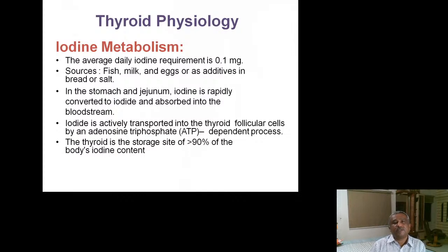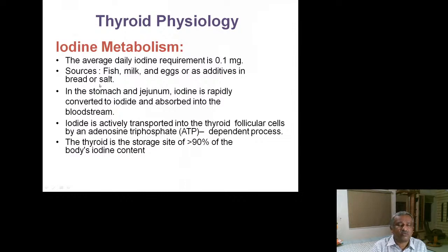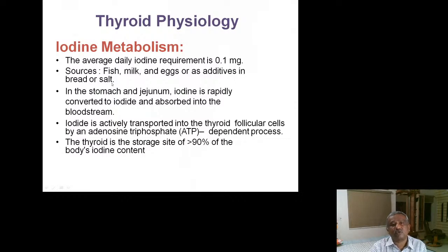First, let's talk about some basics. In thyroid physiology, iodine metabolism is very important. The average daily iodine requirement is 0.1 milligram. The main sources are fish, milk, eggs, or as an additive in bread and salt. In India, we are now using iodized salt — it was a community initiative to reduce epidemic goiters. Iodized salt given to pregnant ladies also helps because lack of iodine is thought to cause lower IQ in children. Giving iodized salt increases intelligence and IQ in children.